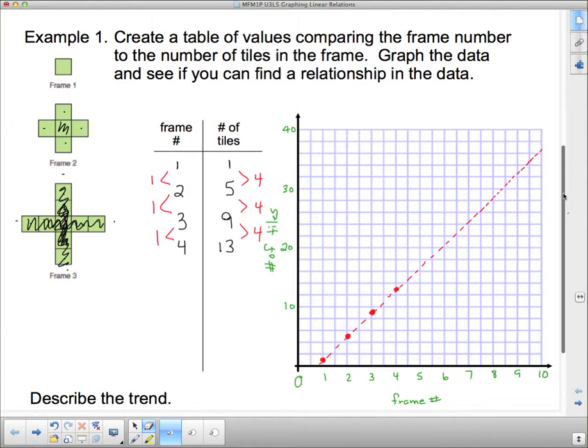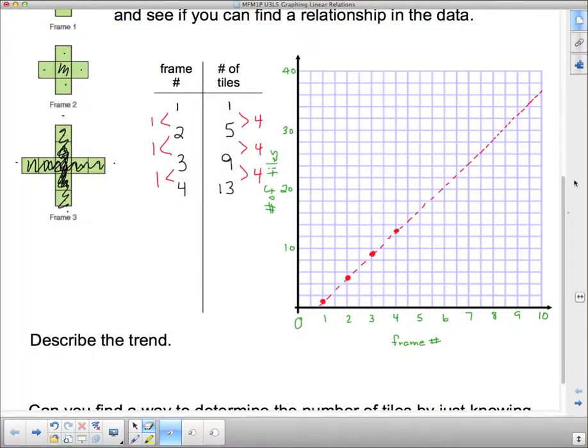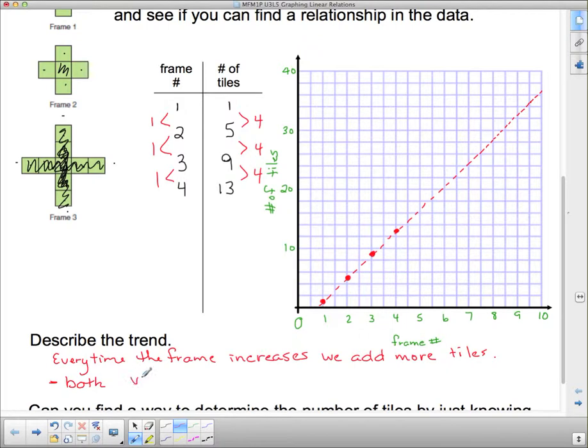So now let's see if we can find a relationship here. This says describe the trend. So describe the trend: every time the frame increases, we add more tiles. So both values are increasing.